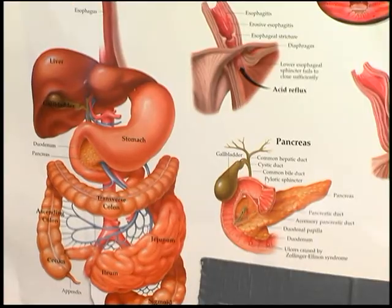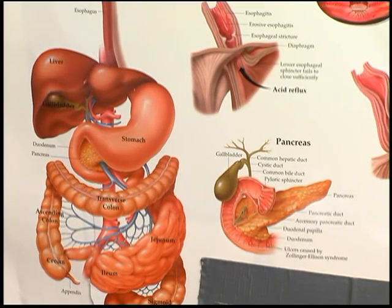The pancreas has two main parts to it: the endocrine part, which produces three separate hormones — insulin being one of them — and the exocrine part, which produces a series of enzymes that are needed to be dumped into the stomach via the duct coming from the pancreas to help us digest food.